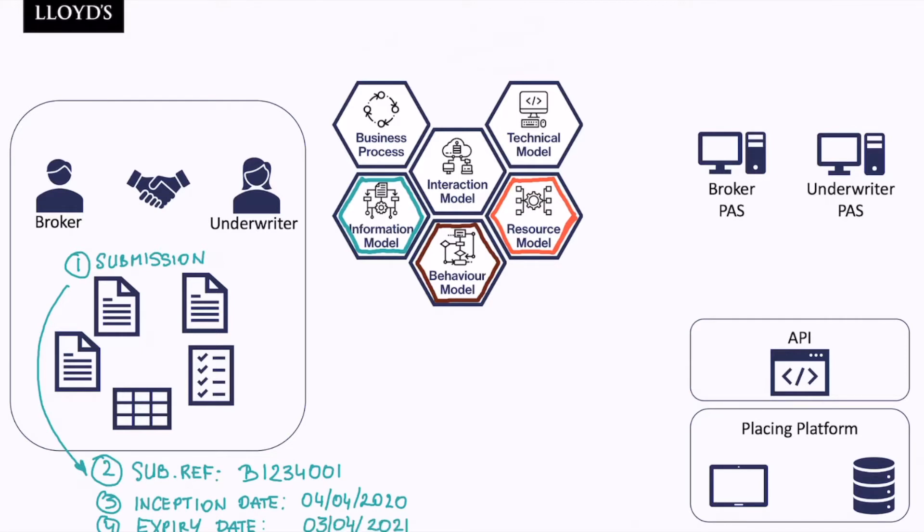Now there are obviously certain constraints about those pieces of information. Let's say the submission reference must start with B and then must have a minimum length of six characters and is composed of alphanumeric characters. Let's say inception date and expiry date both must be of a date format, and fundamentally inception date should always be less than the expiry date.